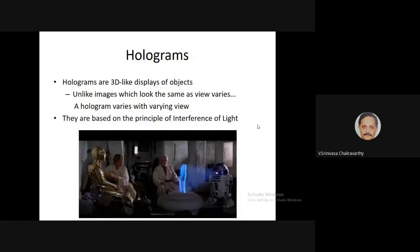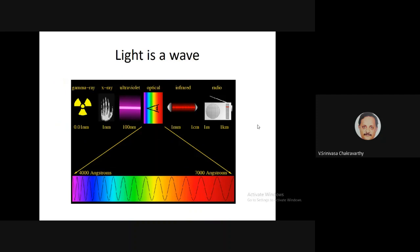Holograms were also popularized in movies — the first Star Wars, which came in the late 70s, had Princess Leia projected by R2D2 as a hologram. So this captured public imagination. Hologram construction is based on the principle of interference of light. Light is an electromagnetic wave and like any wave it shows properties of interference.